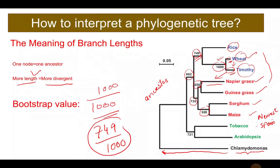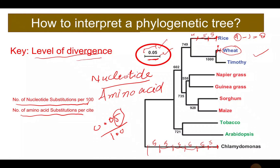What are the chances out of 1000 that rice, wheat, and Chlamydomonas would be in one clade? 15 and 30 — so actually there are 30 nucleotide substitutions in Chlamydomonas compared to wheat.